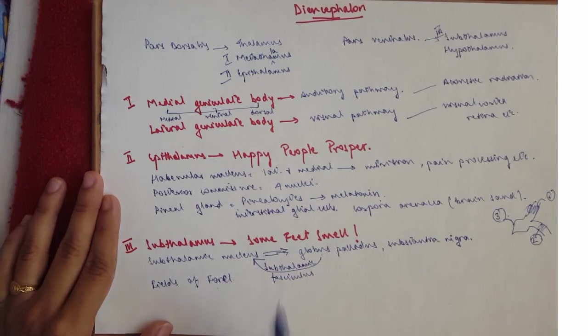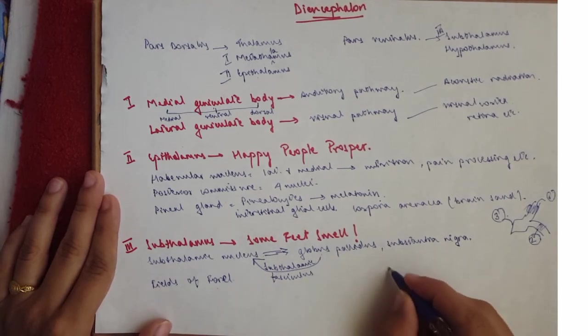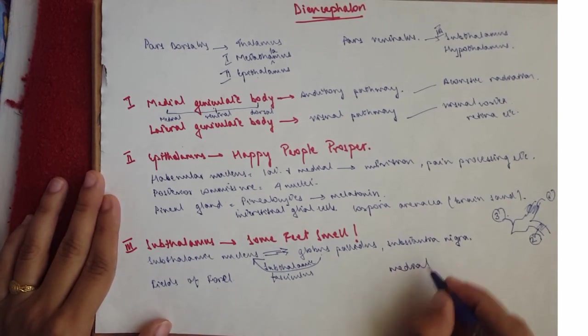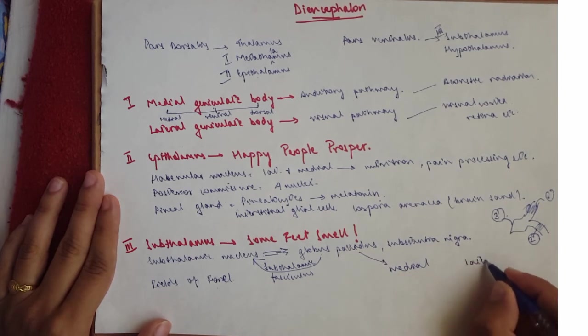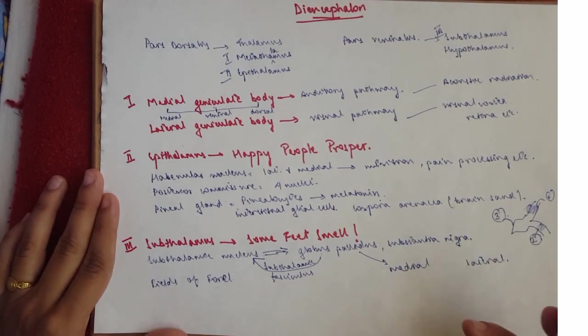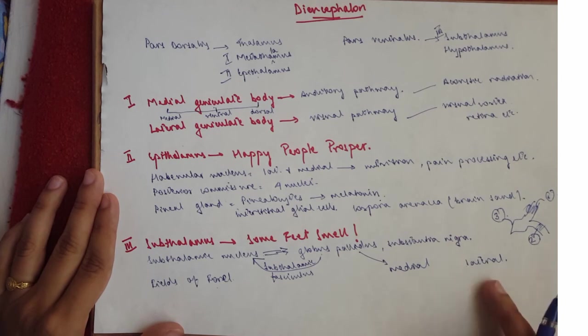Then you have the fields of Forel. Now the fields of Forel is the ansa lenticularis. Now the globus pallidus has a medial side and a lateral side. Now the fasciculus lenticularis comes from the lateral side.